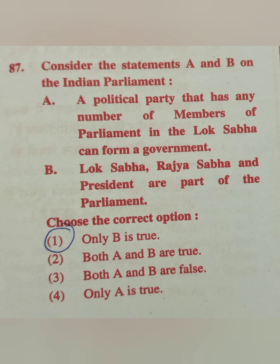Question 87: Consider statements A and B on the Indian Parliament. Statement A: A political party that has any number of members of Parliament in the Lok Sabha can form government. Statement B: Lok Sabha, Rajya Sabha and President are parts of Parliament. The correct answer is option 1 — only B is true.